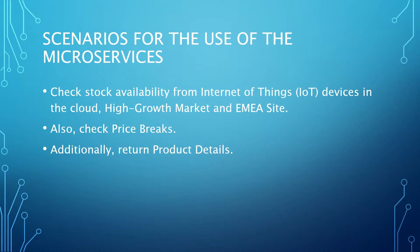There are some use cases for the use of these microservices. One of them was to check stock availability, another one was to check price breaks, and finally there was one called product details that had to be provided to Internet of Things devices.